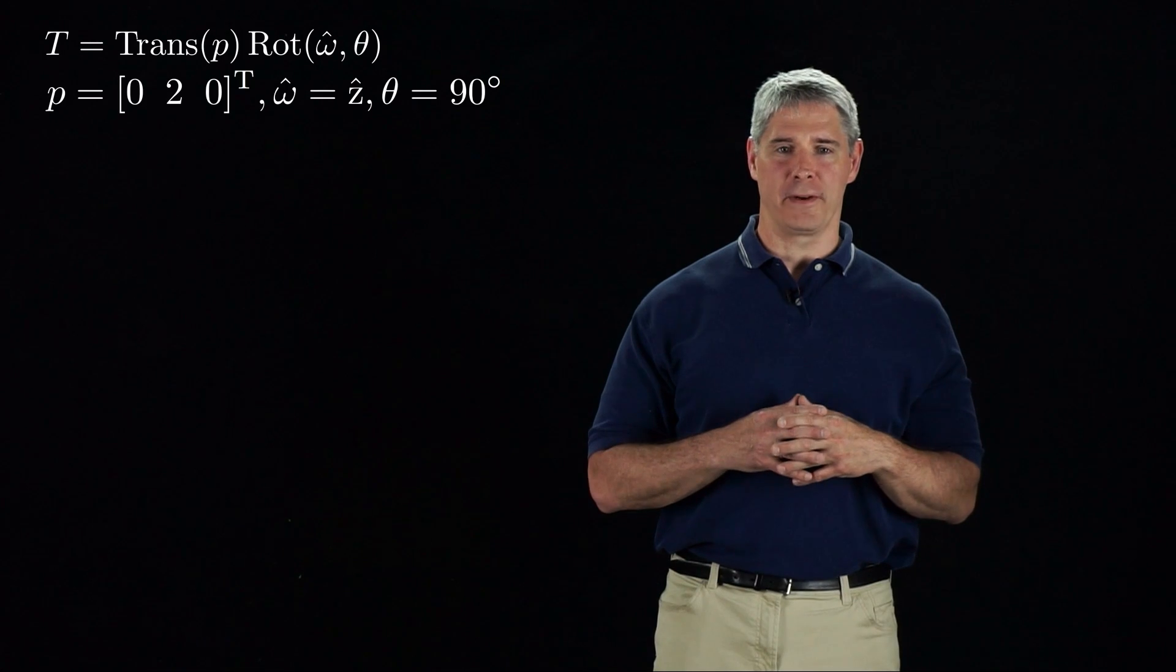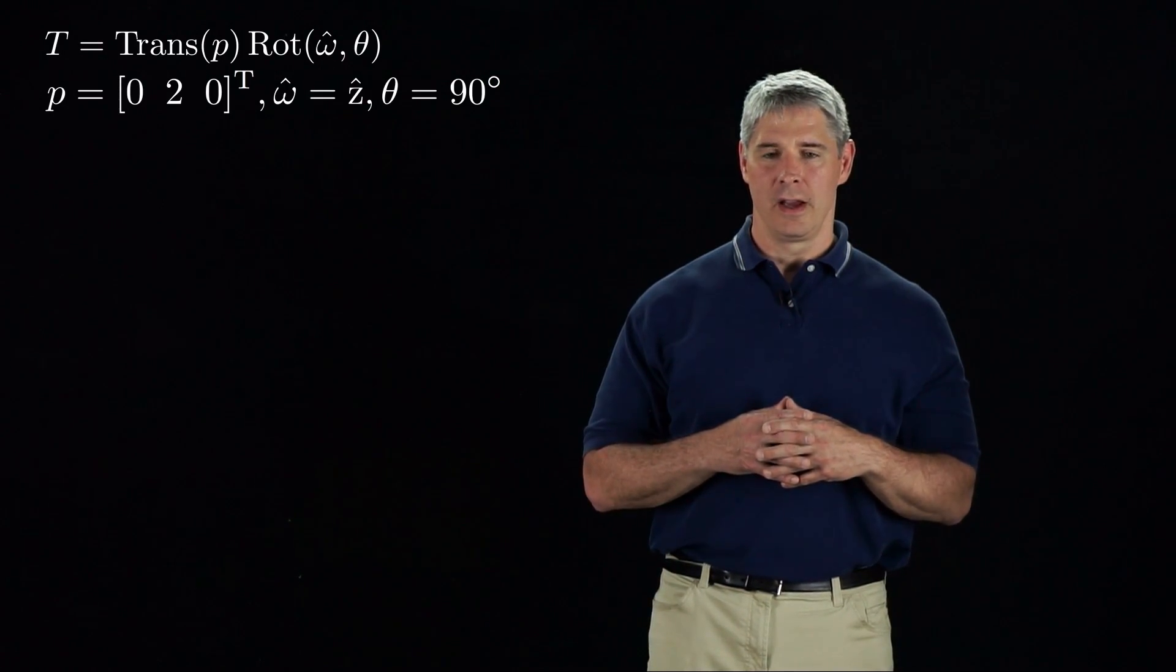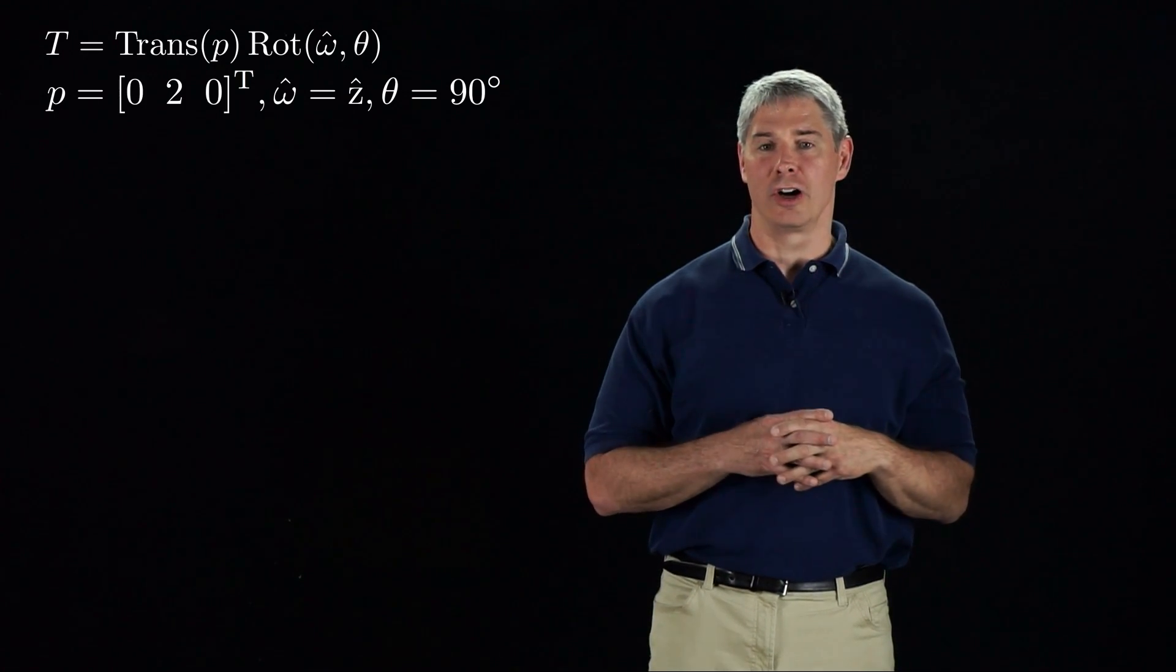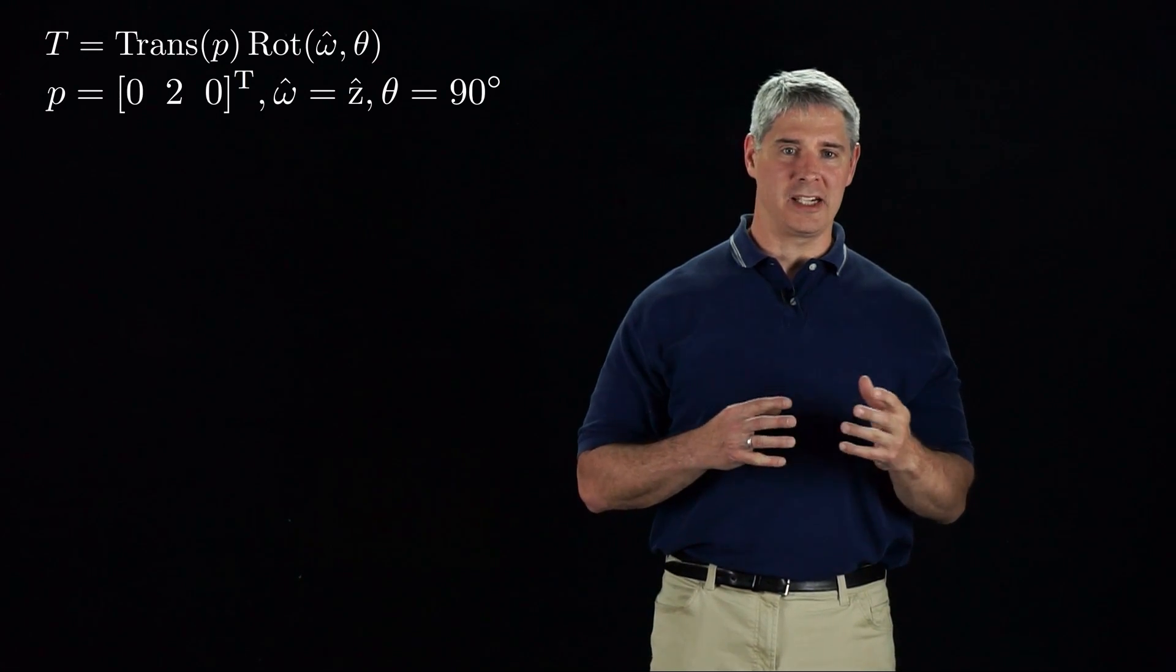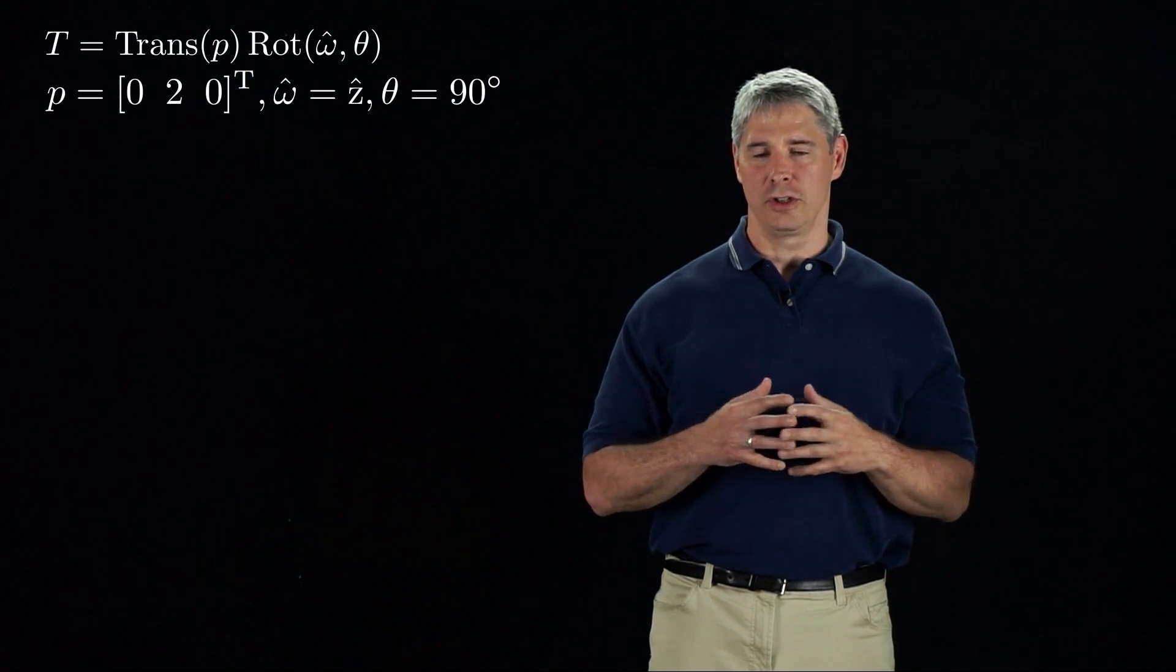Let's consider a specific example of using a transformation matrix T to move a frame. Our transformation T is defined by a translation of two units along the y-axis, a rotation axis aligned with the z-axis, and a rotation angle of 90 degrees, or pi over 2.